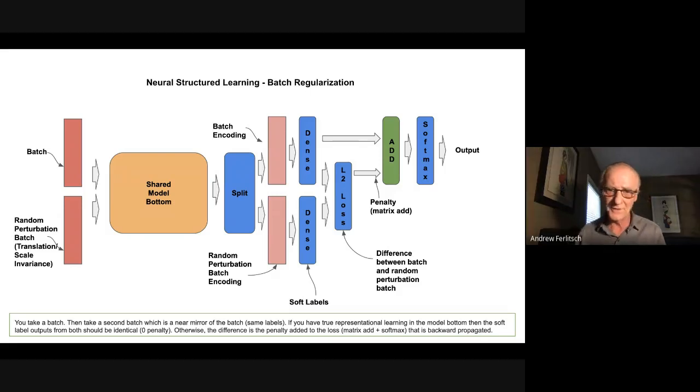The theory behind neural structured learning is that if my model was perfectly generalized, then if I took an example, a sample, an image, and I took another image that was almost identical, that when both of them went through the model, when I come out the other end before the softmax, but simply when I come out the dense layer, the probability distribution should be identical.